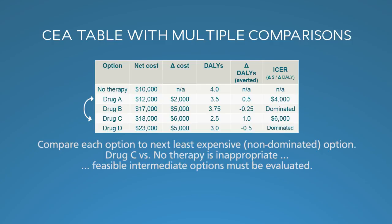The way I like to explain incremental CE ratios to my students is by reference to my children's desire for a fancy sports car. They want me to spend $100,000 for a car. I tell them that sounds like fun, but I have a Volkswagen — it works fine and costs $25,000. For me, the comparison isn't the $100,000 car versus no car; it's $100,000 versus the VW. It's all incremental. So if you're going from no therapy to A, that's $4,000 per DALY averted. You don't compare to B because it's dominated. Drug C is $6,000 per DALY averted compared to A, and D is again dominated. Now, if Drug A is somehow impossible — say it's under a restrictive patent — then you compare C to no therapy, and Drug A wouldn't even appear in the table.